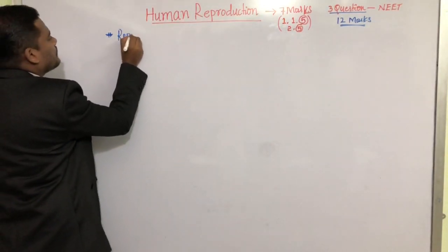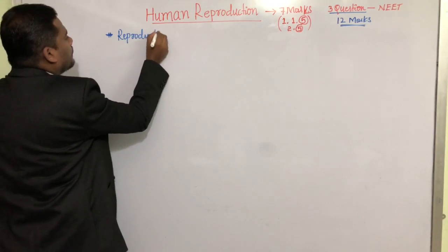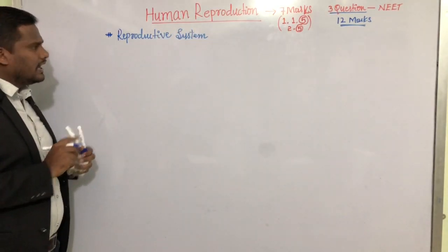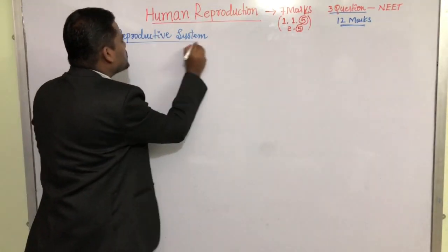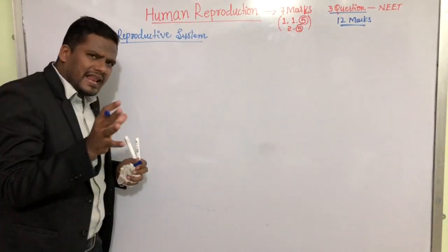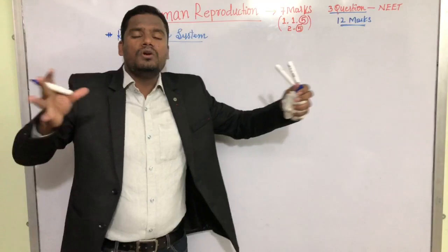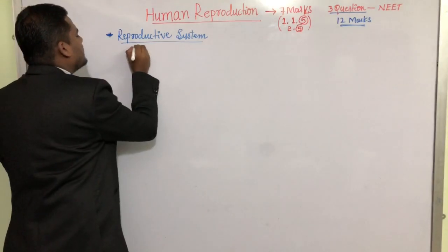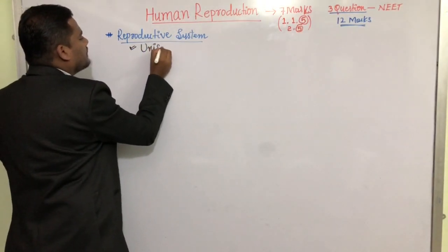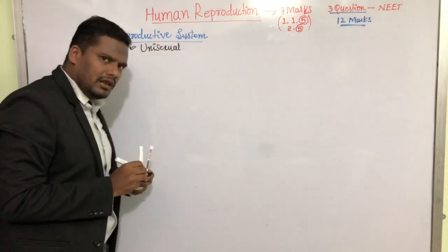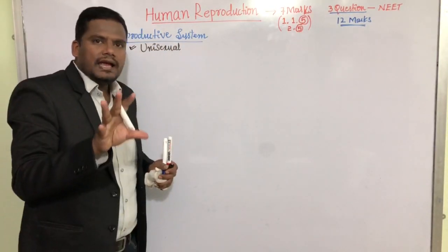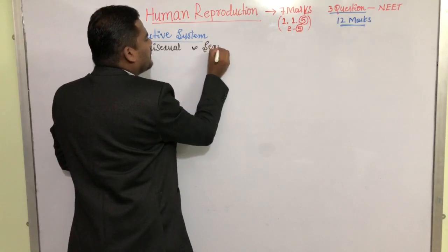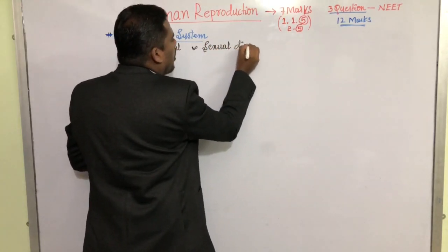At the very beginning of the chapter we are going to understand about the reproductive systems. As we know, in human beings we have male and female reproductive systems located in two different individuals. Hence human beings are unisexual — each individual carries a single sex.